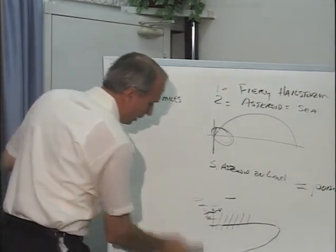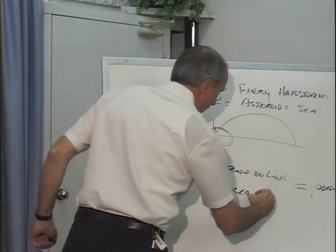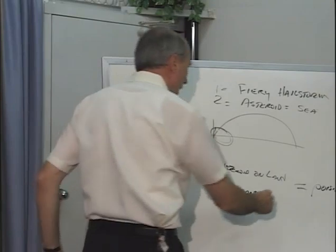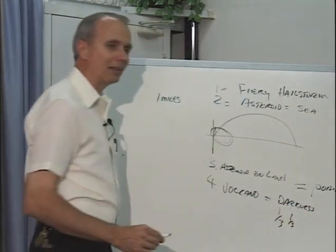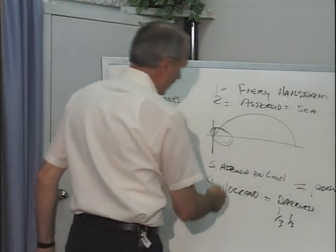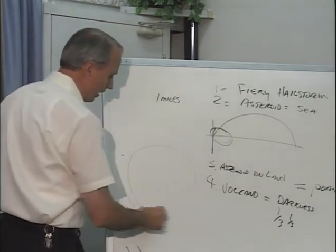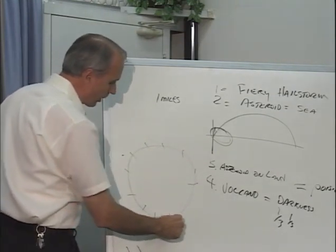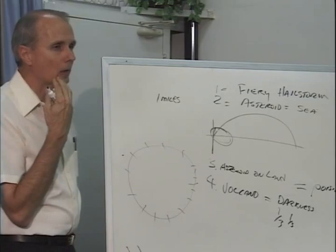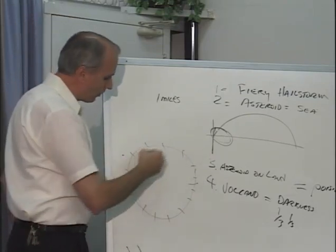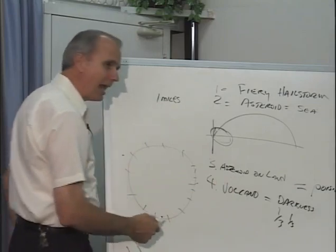The fourth trumpet will be volcano eruptions. The Bible doesn't say volcano eruptions. The Bible says there will be darkness - a third of the day and a third of the night are without light. The way I understand this is after these two asteroid impacts have changed the geological strata of Earth, the ring of fire cuts loose. The ring of fire is about 4,000 volcanoes, many inactive. On Earth right now, there's only about 400 active volcanoes, but there are about 4,000 known volcanoes.